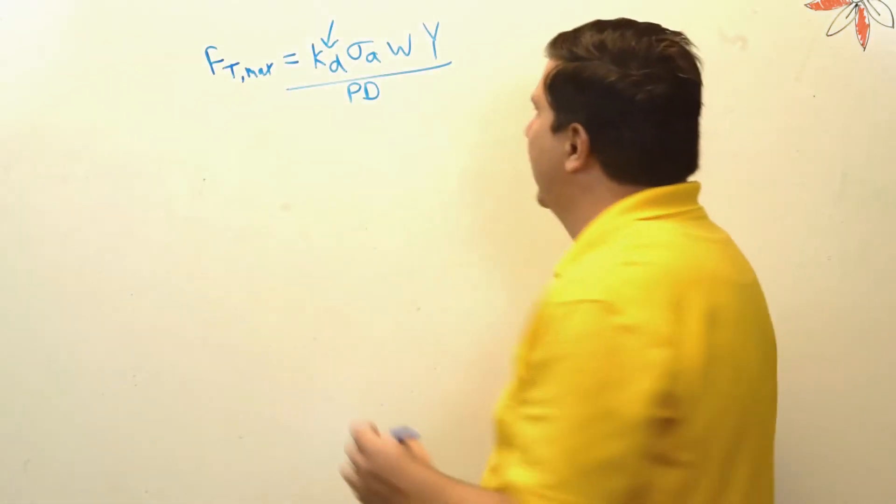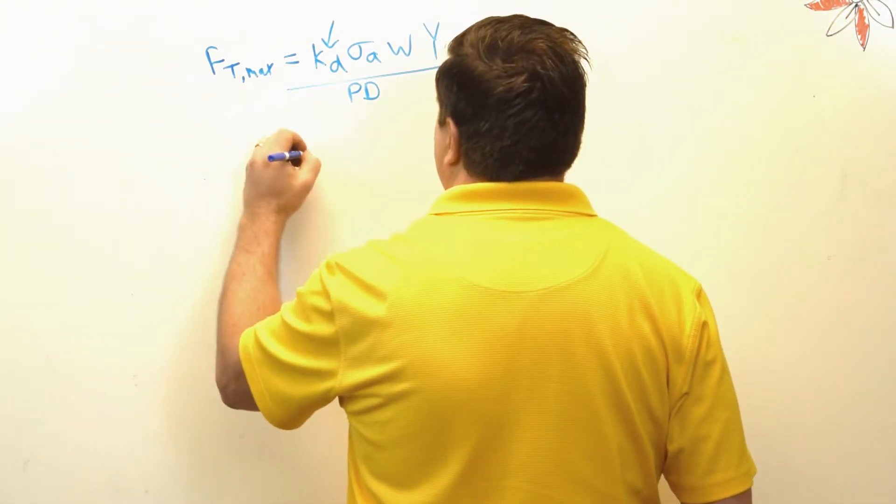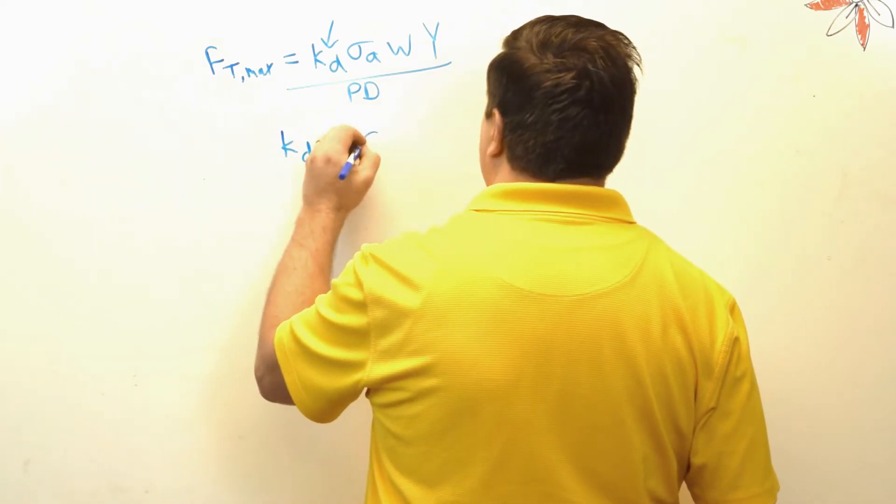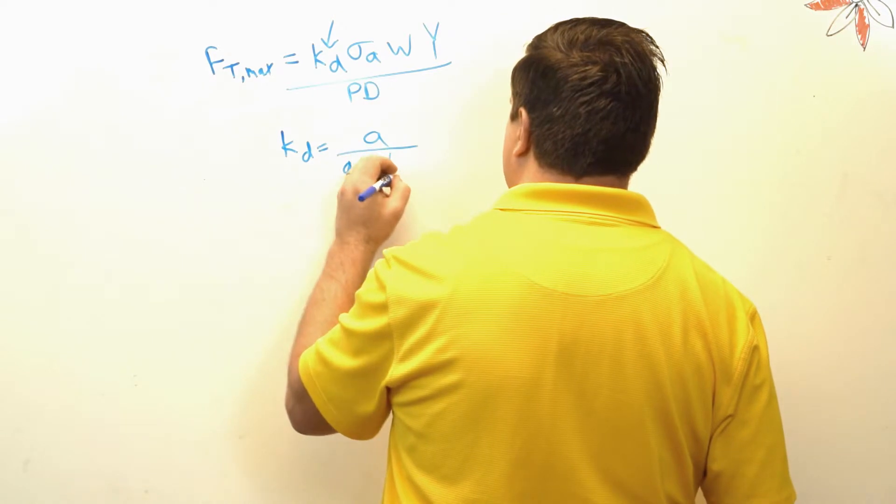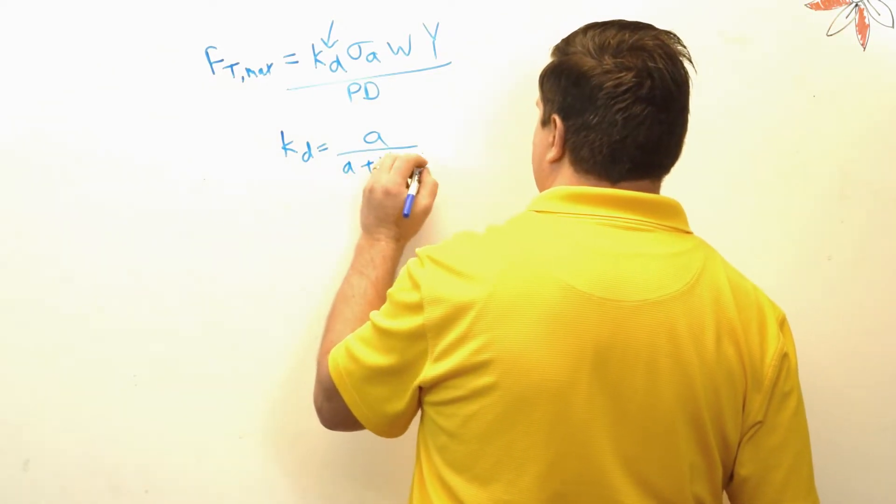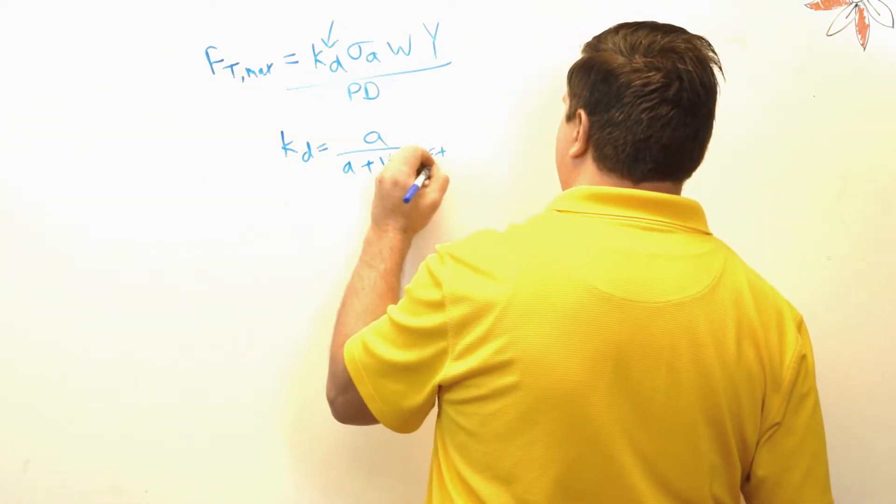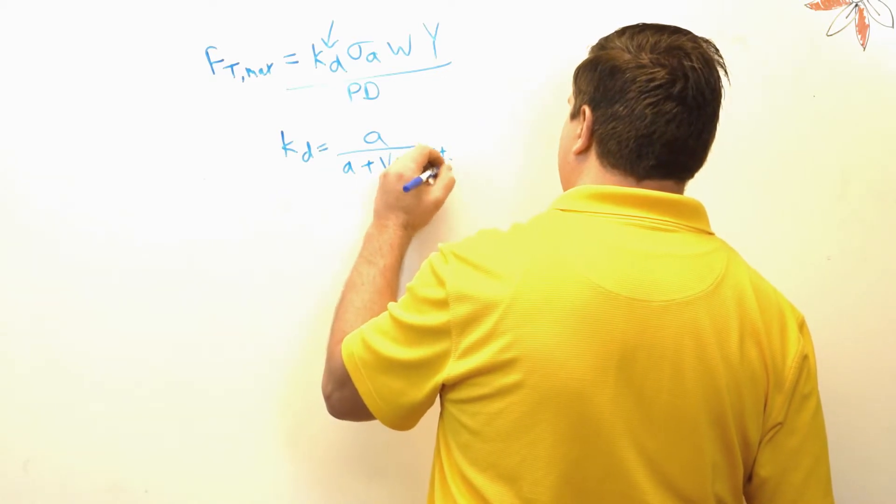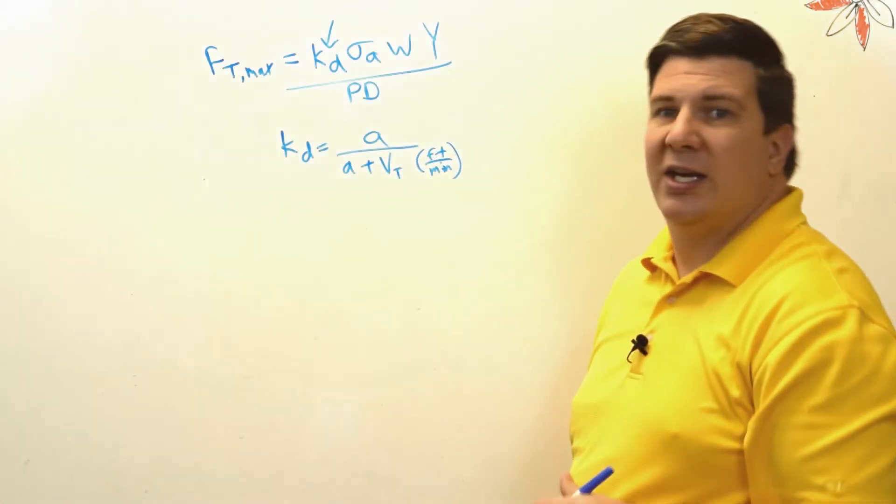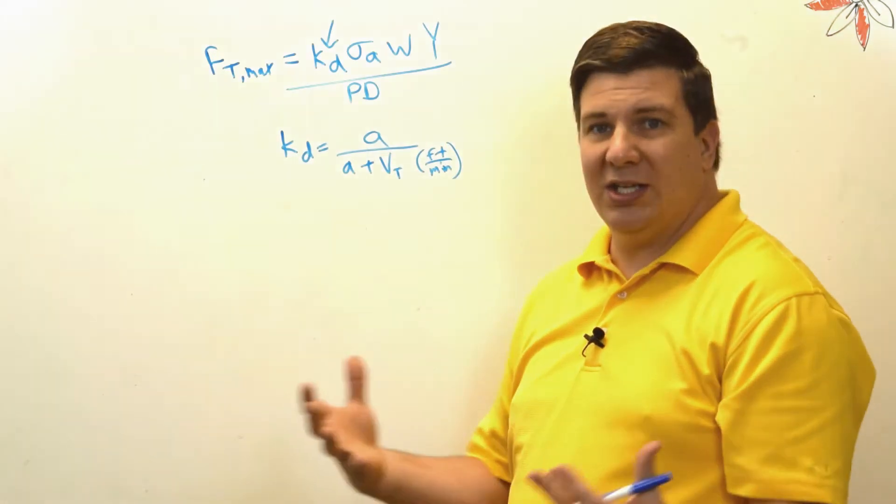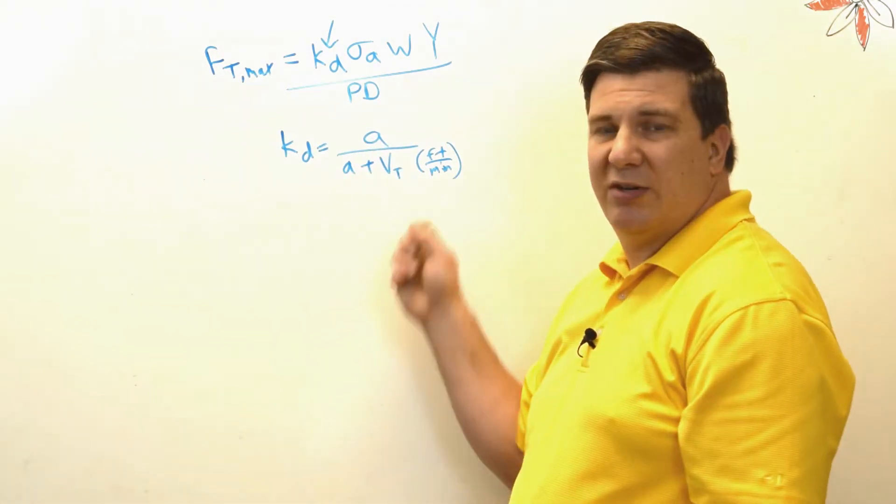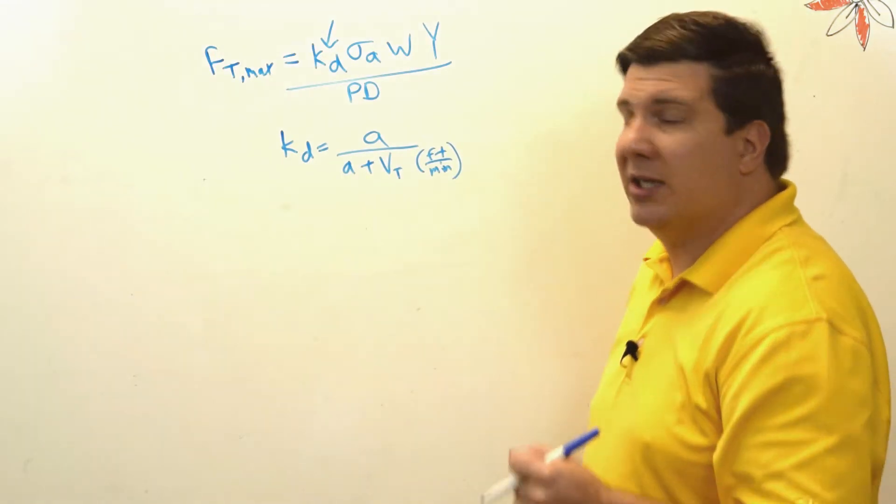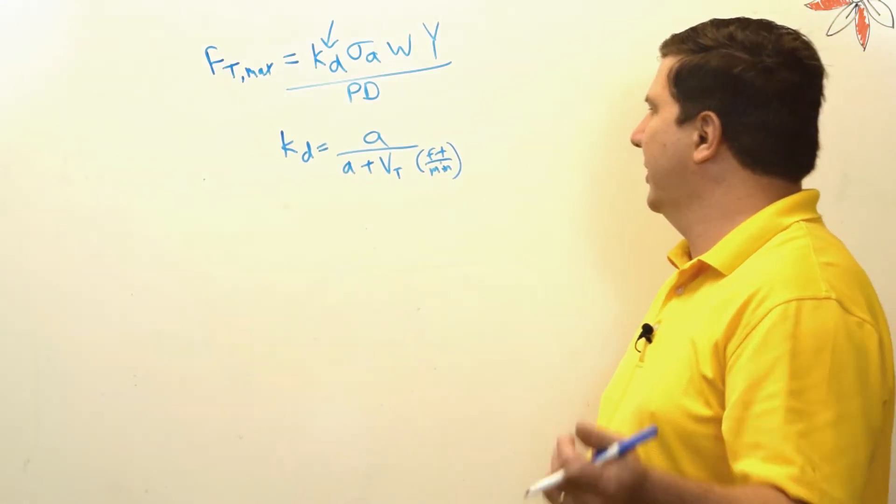And kd is actually an equation. It is equal to constant a over a plus your velocity, and that's your tangential velocity in feet per minute. So obviously if your velocity is nothing, this is going to be one because it's just a over a. But if your velocity is very fast, it's going to be different or it's going to be a lot lower.